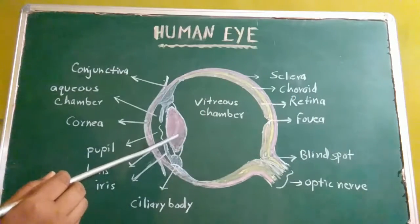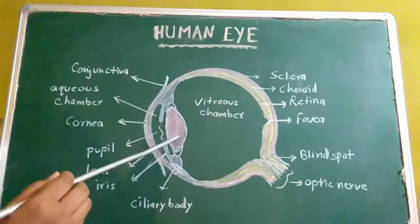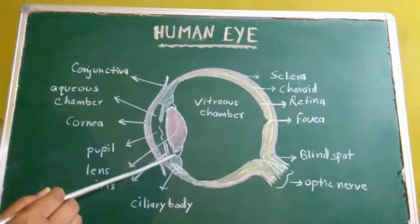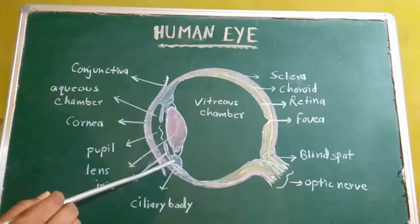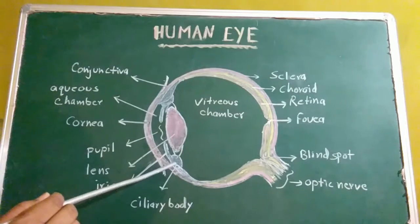Lens is transparent, crystalline and bi-convex. It is firmly held in place by suspensory ligaments which are attached to ciliary bodies.